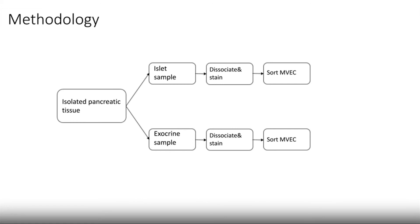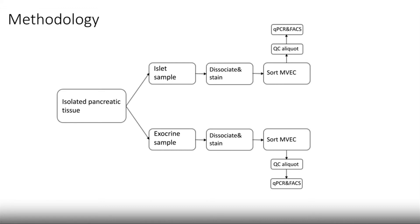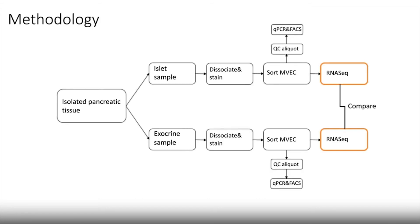Having done this, we took small aliquots of cells for quality control analysis. We assessed purity through qPCR and flow cytometry on a separate instrument, and the majority of cells were used for RNA-seq. We then compared the data from these two tissue compartments from our isolated pancreatic samples.